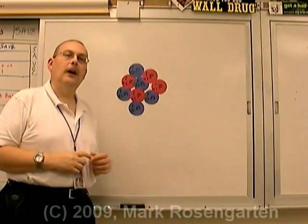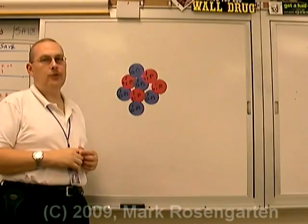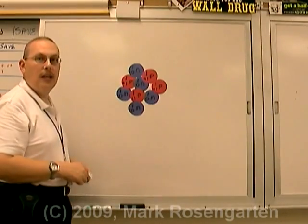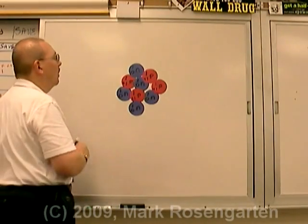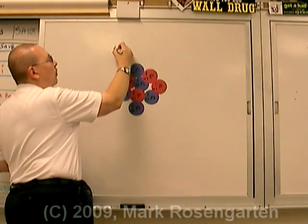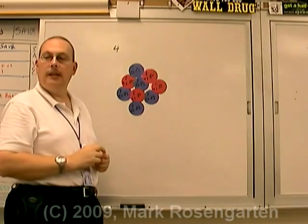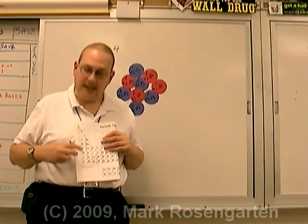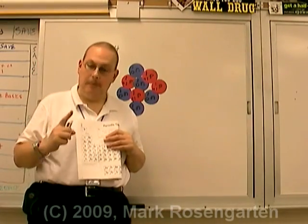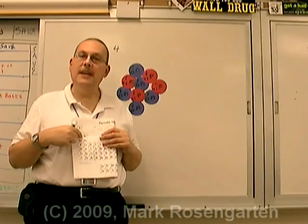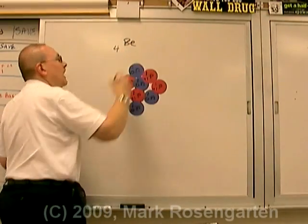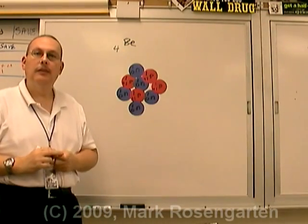Let's see if we can identify this nucleus right here. This nucleus contains four protons, therefore it has an atomic number of four. And if you look on the periodic table, the element that has four protons — an atomic number of four — is Be, beryllium. So I'll put the symbol Be to indicate which element we're dealing with.